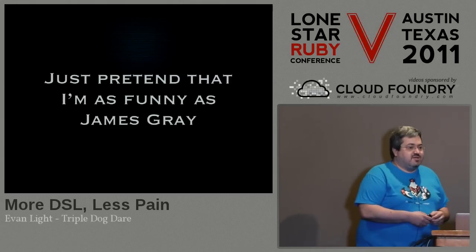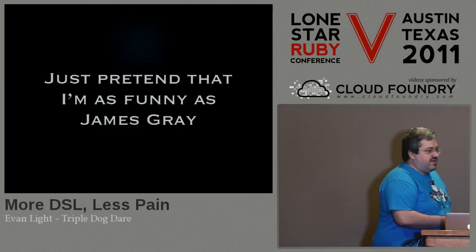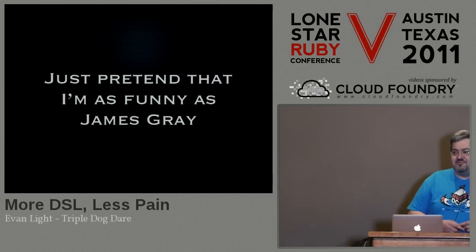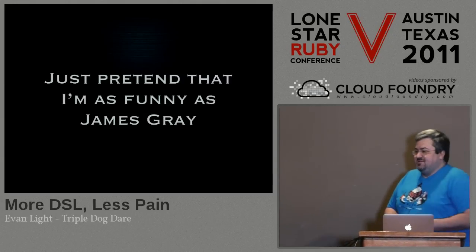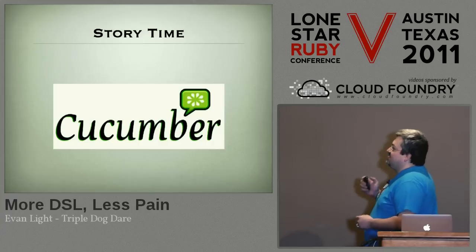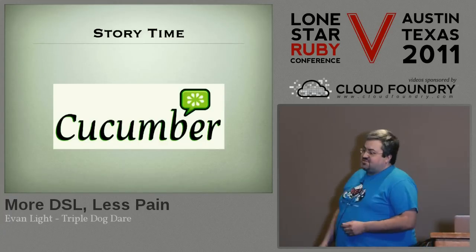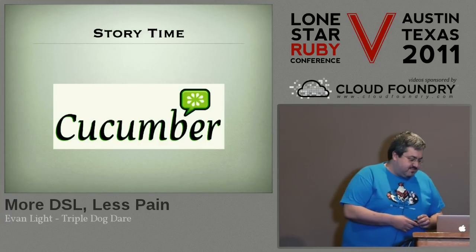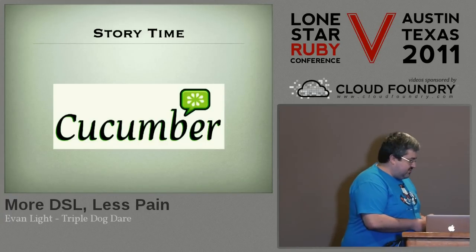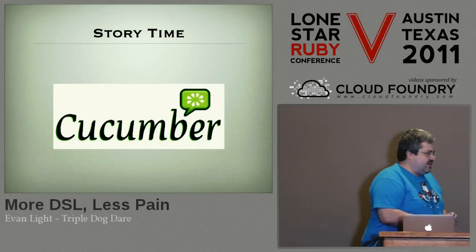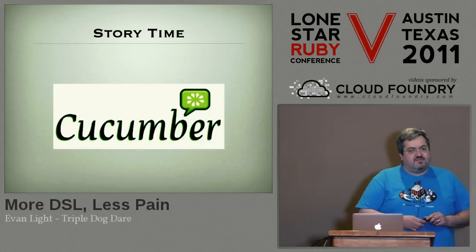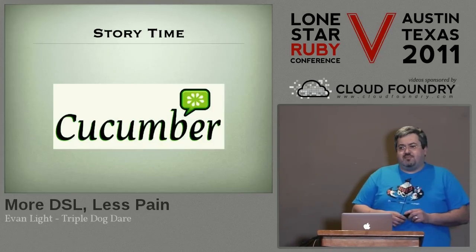Just pretend I'm as entertaining as James Gray. I'll make an effort — I don't know if I'll succeed. So first, a little story. I came to spending a lot of time thinking about DSLs in Ruby by way of this tool called Cucumber.